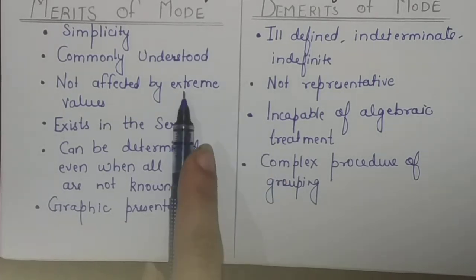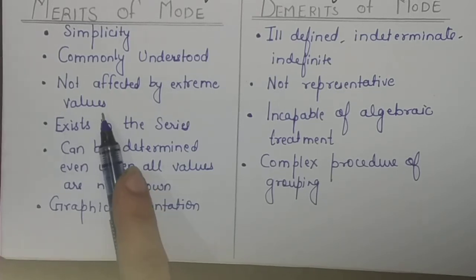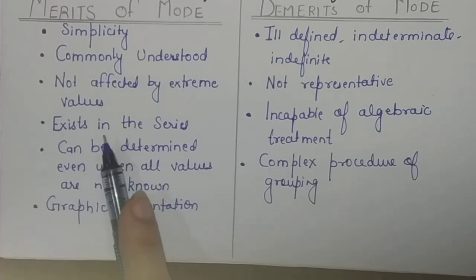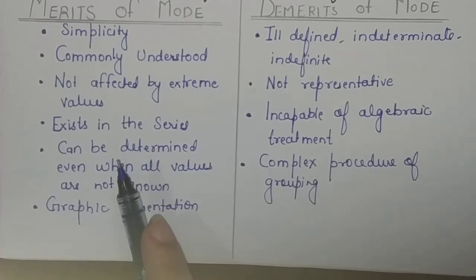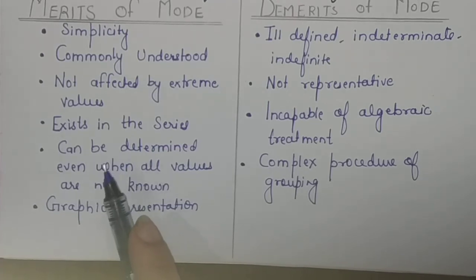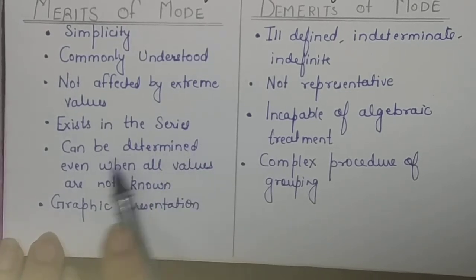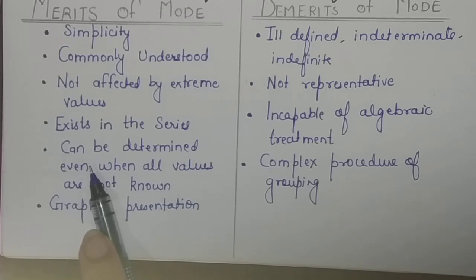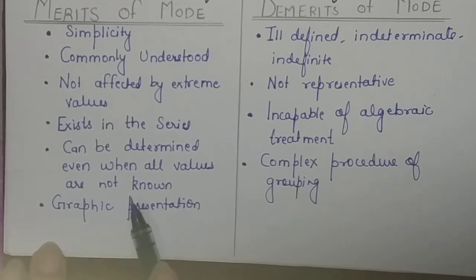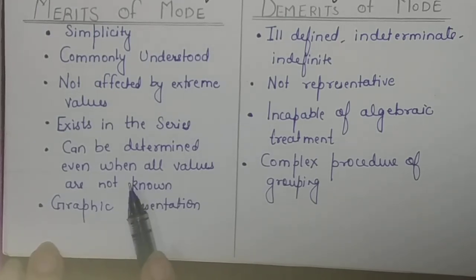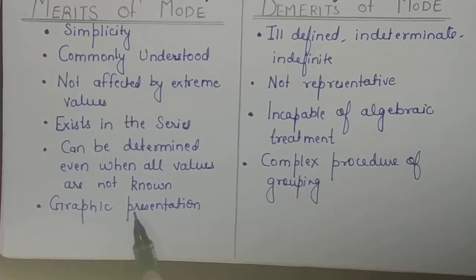Another merit is that mode is not affected by extreme values. If your data has extreme values that are very small or very large, the mode is unaffected because it simply reflects what is most popular — what exists most frequently in the series. Mode also exists in the series itself, unlike the mean which may not be an actual data value.